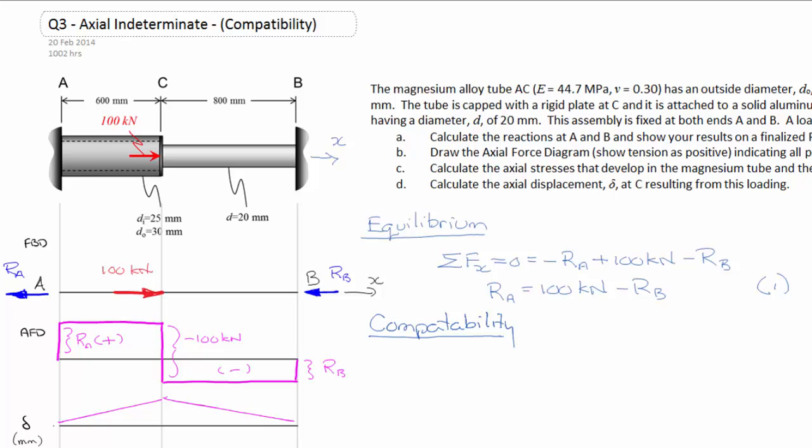The easiest one here is if we look at the displacements over the entire length of the structure, from A to B, they sum to zero. They start at zero and come back to zero. That also means that the displacements between A and C plus the displacements between C and B have to equal zero. This becomes our compatibility equation.